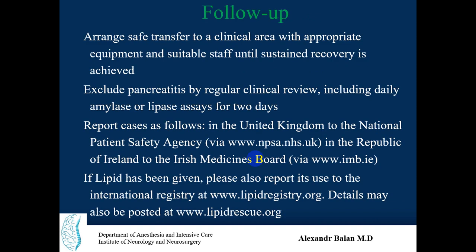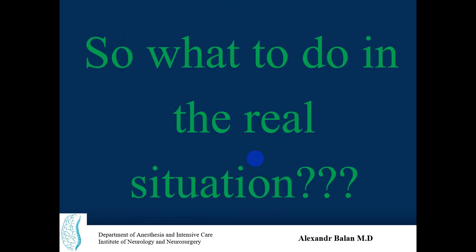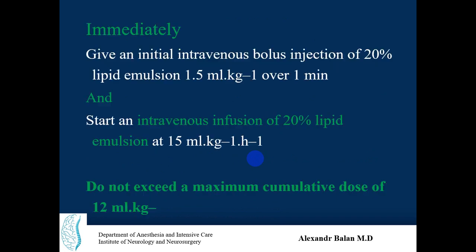If your hospital does not have the necessary resources to treat severe toxicity, you can transfer the patient to another clinic with appropriate equipment and suitable staff. In the real situation, immediately give an intravenous bolus injection of 20% lipid emulsion — 1.5 milliliters per kilogram over one minute. For a 70 kg patient, that is 105 milliliters over one minute as a bolus infusion.